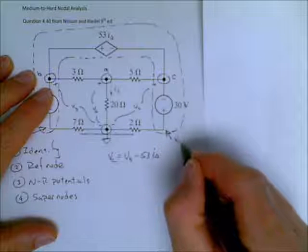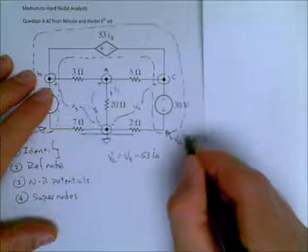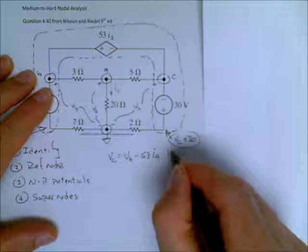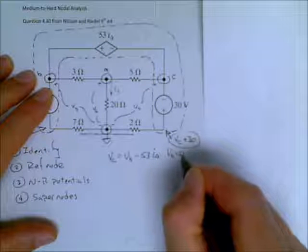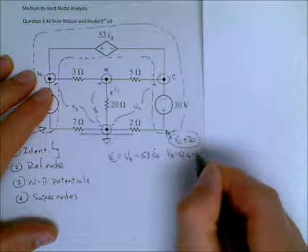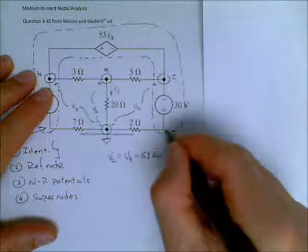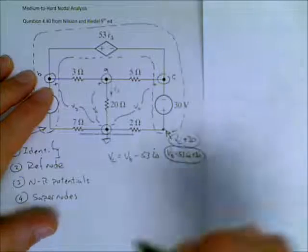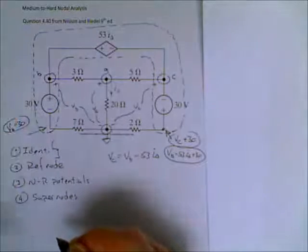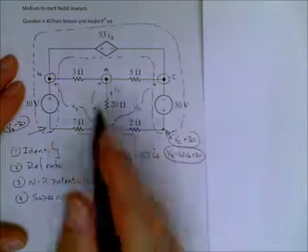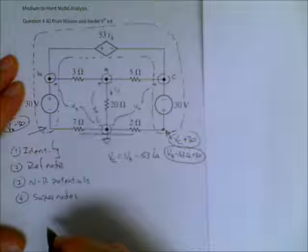This is VC plus 30 or VB minus 53 I delta plus 30 at this location right here. All right. So, we've looked at our super nodes. We've defined our super nodes in this particular situation.